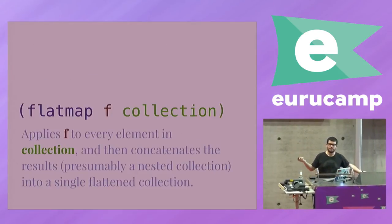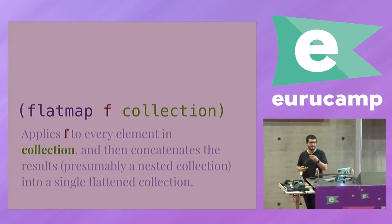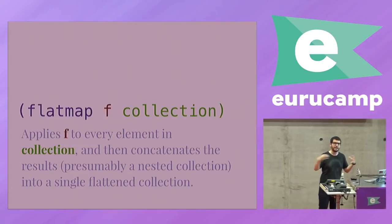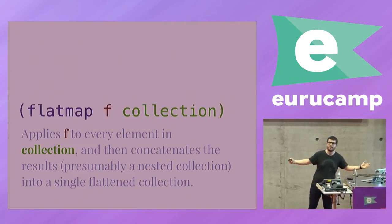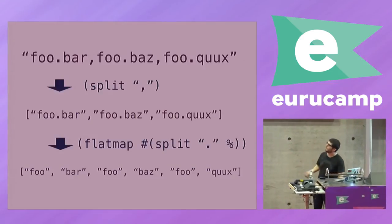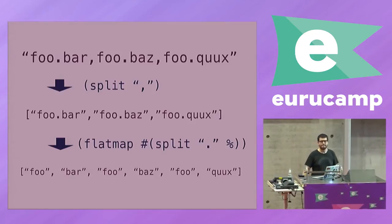So there's, of course, another function called flat map, you also have it in Ruby, which just applies the function to every element in the collection, and then concatenates the result into a flattened collection. So fair enough, flat map does exactly what we want. Again ignore the code, just pseudocode, so we get a flattened collection.